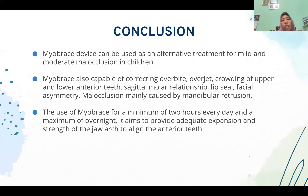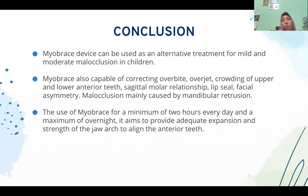Conclusion. Myobrace can be used as an alternative treatment for mild and moderate malocclusion in children. Myobrace is also capable of correcting overbite, overjet, crowding, upper and lower arch issues, and bimandibular problems. The use of myobrace for a minimum of two hours every day and a maximum of overnight aims to provide adequate expansion.